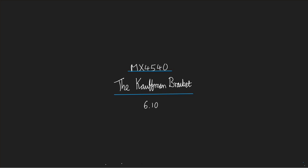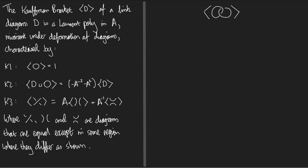So here's how we proceed with it. On the left we've got the definition, and on the right we're going to do a little example. The Kauffman Bracket is written as brackets D. It's an invariant of a link diagram D — so D is a diagram. The Kauffman Bracket is going to change if you change the diagram by Reidemeister moves. D is not a link, it's a diagram. The Kauffman Bracket of this diagram is a Laurent polynomial in some variable A.